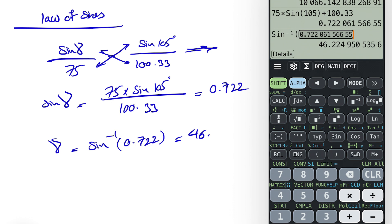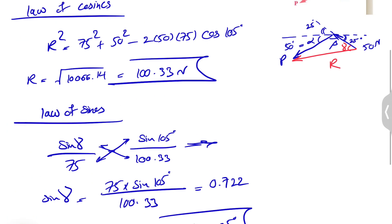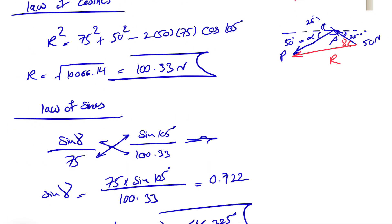This is going to give us 46.225 degrees, but that's not the angle that shows the direction. What we're interested in here is basically the angle that R makes with our horizontal. If I draw our horizontal line in here, this is our horizontal. We found gamma. We know this angle is 25 degrees. So if we find this angle here...